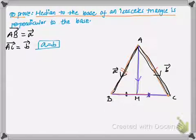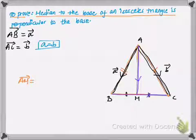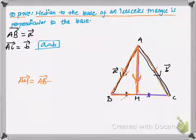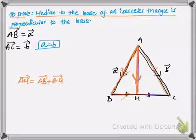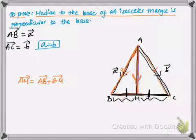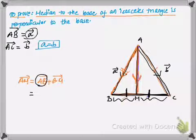Now I'll find vector AM. Moving from point A to point M is the same as moving from A to B and then B to M. So vector AM equals vector AB plus vector BM. Since the median divides the base into two equal halves, BM equals MC.